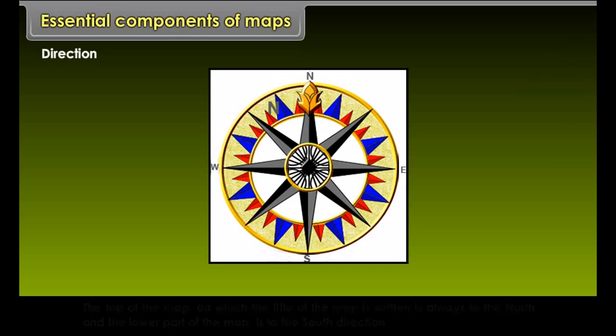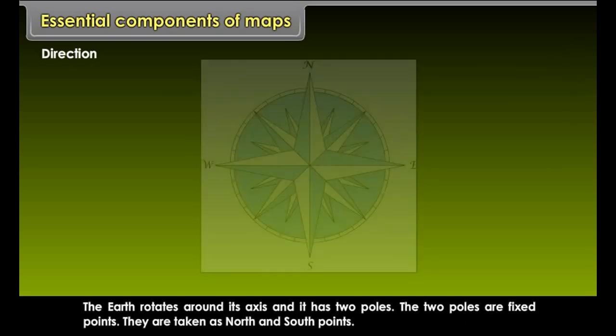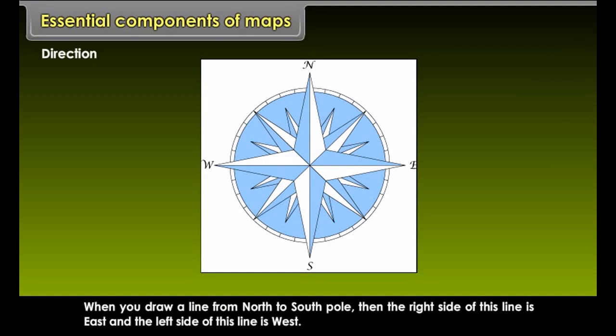Direction. Direction is known by the arrow marked with N on the map. It is also known by an instrument called compass. The top of the map on which the title is written is always to the north, and the lower part is to the south direction. The right-hand side is the east, and the left-hand side is the west.